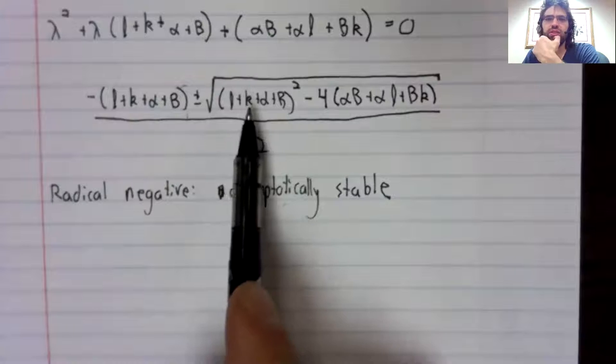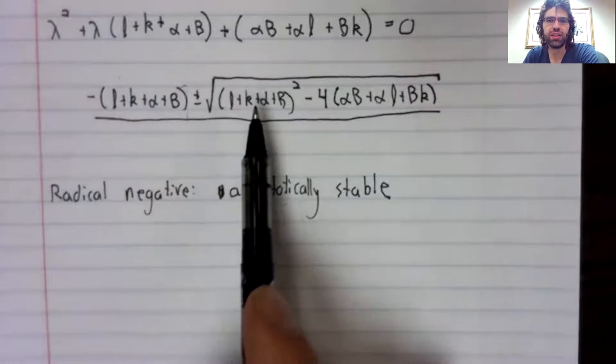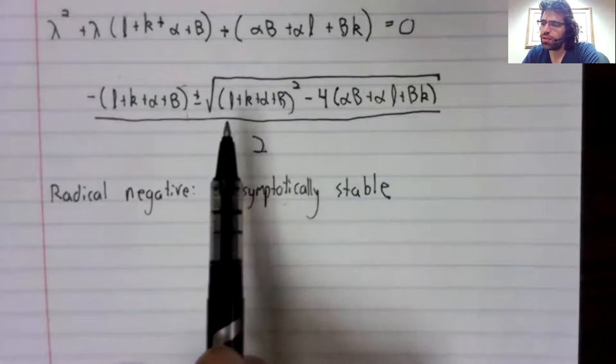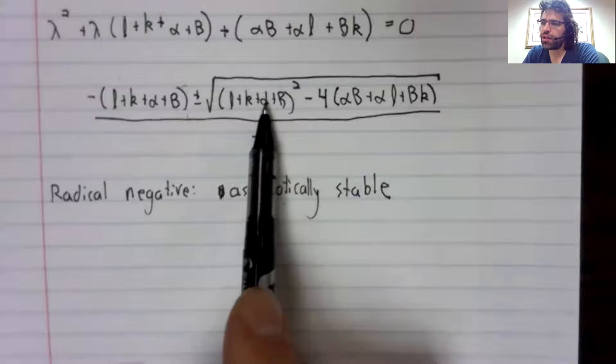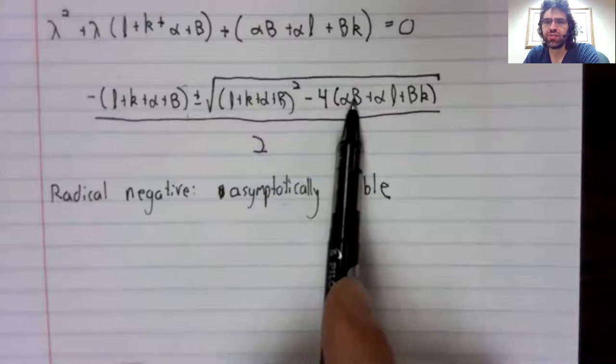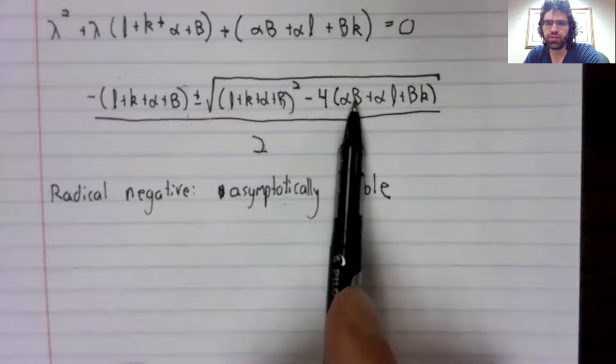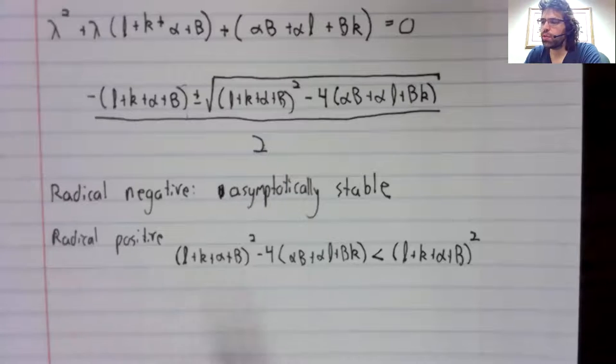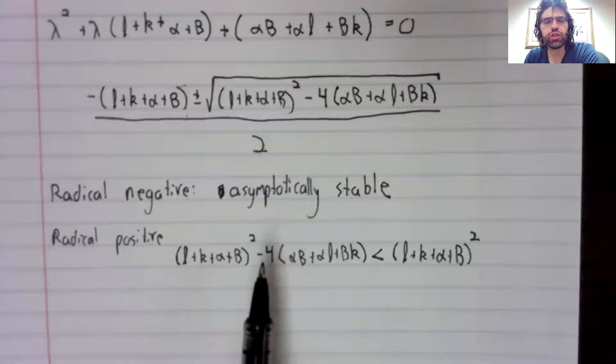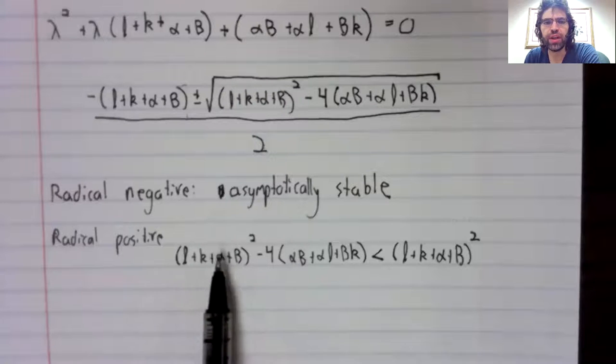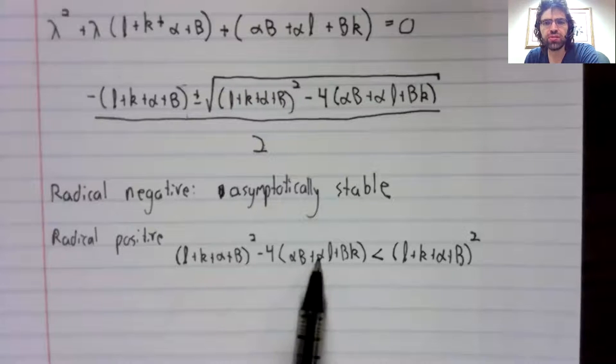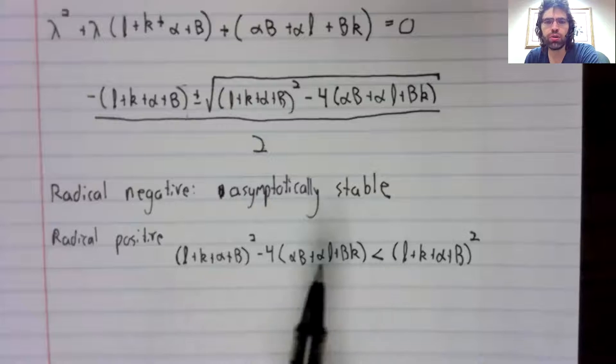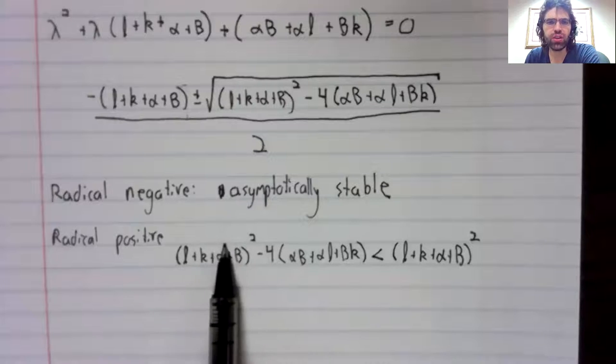Suppose the discriminant is positive. Now you have a positive number minus another positive number. The subtraction makes this smaller—this minus this is smaller than just this.